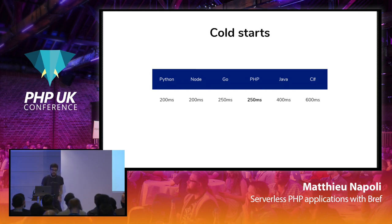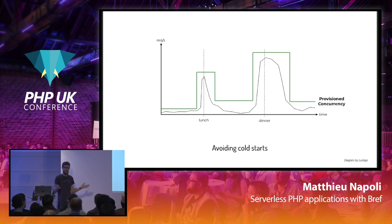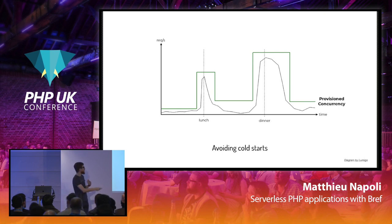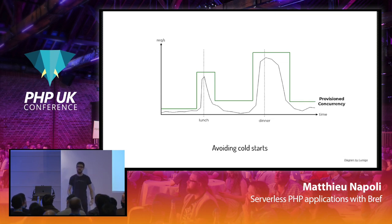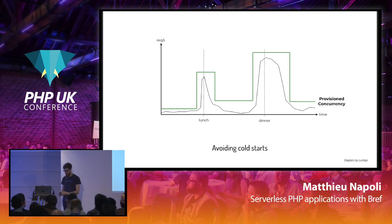If you really want to use Lambda and are worried about cold starts, you can provision instances — say you always want 10 containers alive. They will always be warm, and you pay for that. You can even provision with different parameters: if you know you have a peak at lunch and at dinner, you can anticipate that and avoid cold starts entirely. I would really recommend this for larger projects. But for web agencies, startups, and small projects that will be big someday — for most of them, it's perfectly fine.